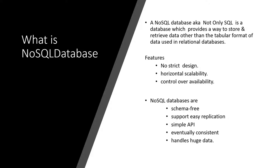In RDBMS you cannot scale up easily when data grows, but with a NoSQL database like Cassandra you can scale horizontally — known as scaling out. You can control availability by adding a number of nodes, which increases availability. NoSQL databases are schema-free, so you don't need to design the data structure upfront. They also support easy replication across nodes.